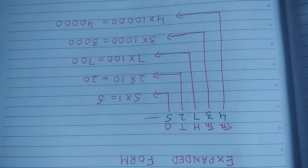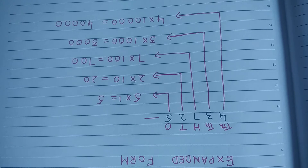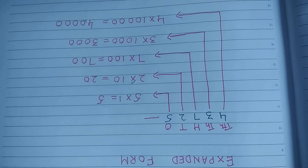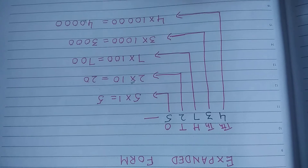Today children, I will make you understand what we mean by expanded form and how to write a five-digit number in expanded form. When we write a number according to its place values, splitting the number according to those place values, it is called expanded form.